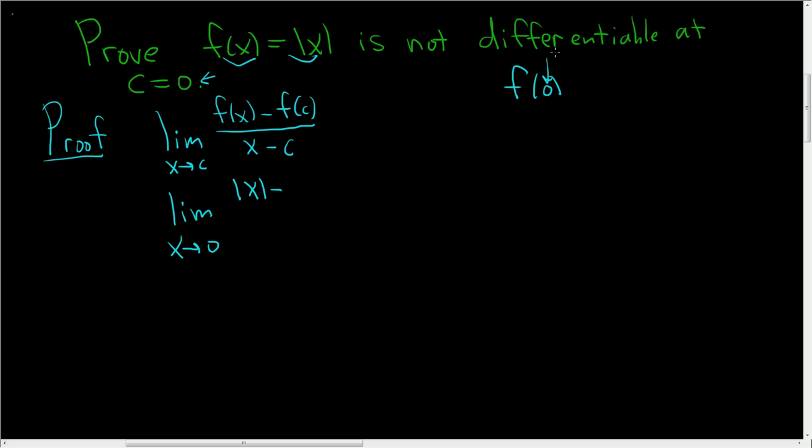f of 0 is the absolute value of 0, which is 0. So this is just 0. Then here we have x minus 0. So we end up with the limit as x approaches 0 of the absolute value of x over x.